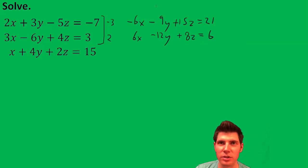Then I just add these two together and negative 21y plus 23z equals 27. I'm going to use this later.